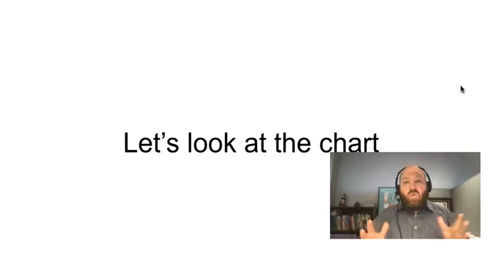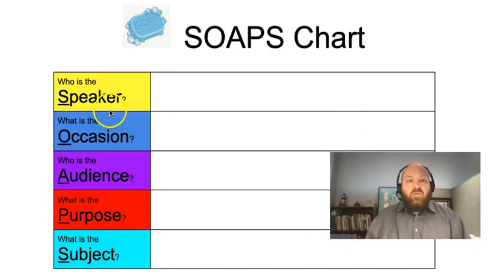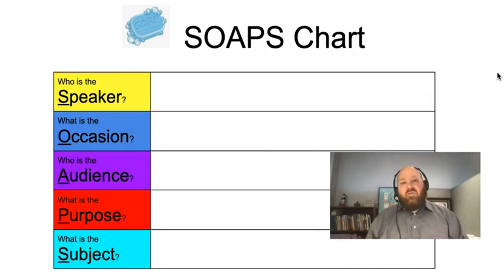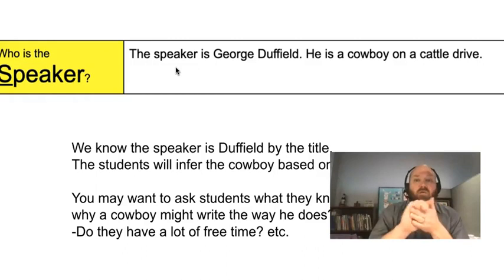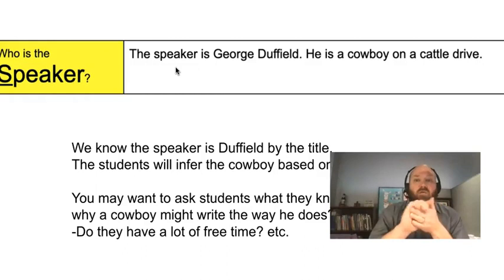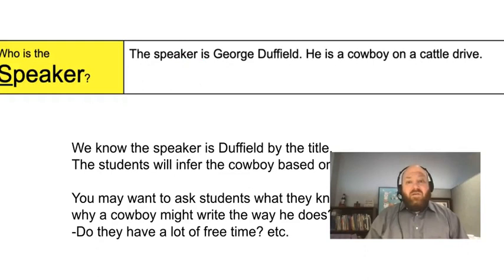So now we're going to put it together in a chart. We have: who is the Speaker, what is the Occasion, who is the Audience, Purpose, and Subject. The chart is color-coded. Students could do this any number of ways. If you have younger students, you could just bring in the evidence and put it in the box. I would work together as a class and say, 'Who is the speaker?' Well, we know the speaker is George Duffield. And then what do we know about George Duffield? We can infer he's a cowboy on a cattle drive. That opens a good conversation about inferences — what makes us think he's a cowboy on a cattle drive?